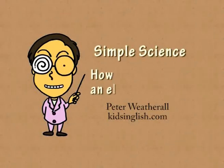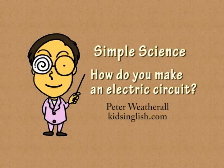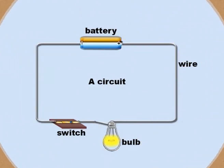Simple Science: How do you make an electric circuit? An electric circuit is made up of a number of components.